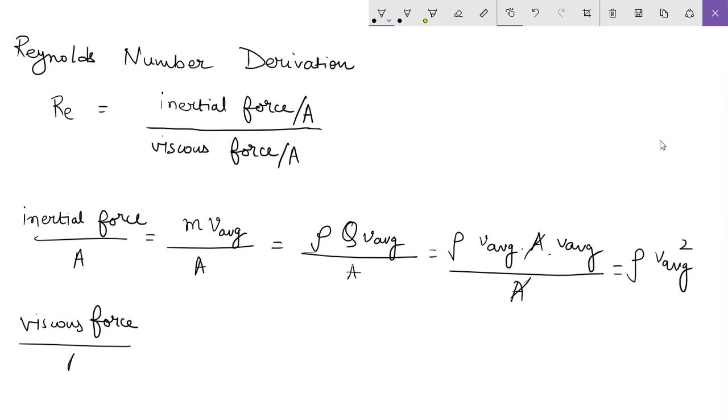Force per unit area. You know about Newton's law of viscosity. From there you can get viscous force per unit area as mu into v average by diameter of the pipe. Okay, so simply you just plug in these two expressions.